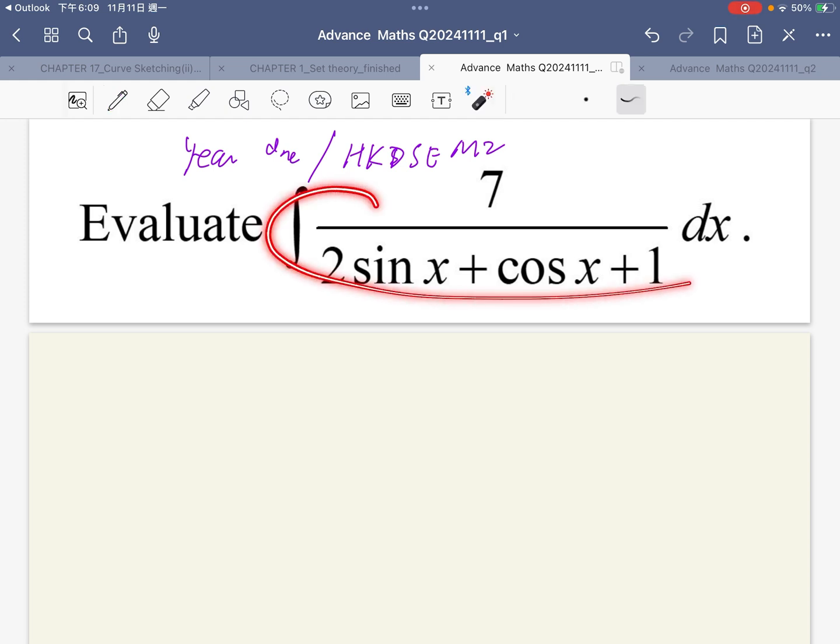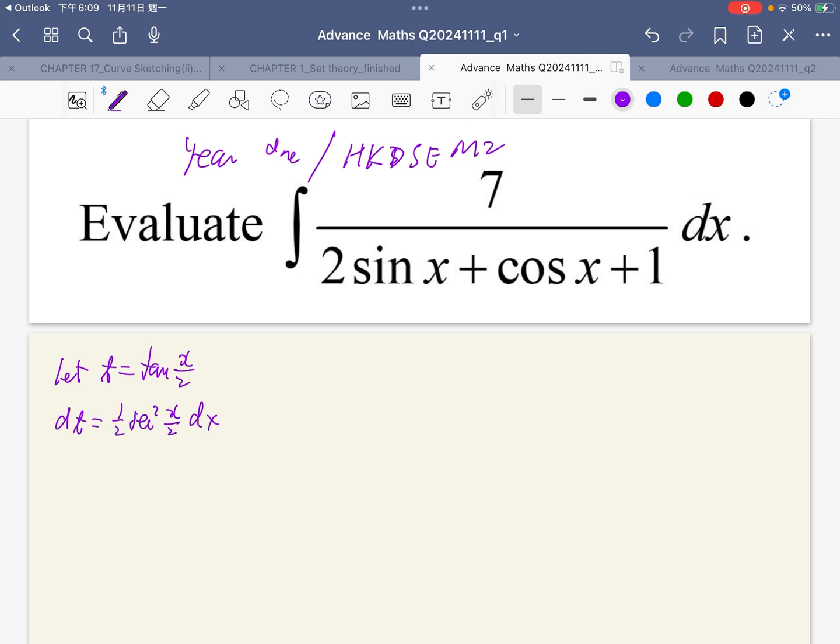In this integration, we can let t equal tangent x over 2, and then dt equals 1 over 2 secant squared x over 2 dx.